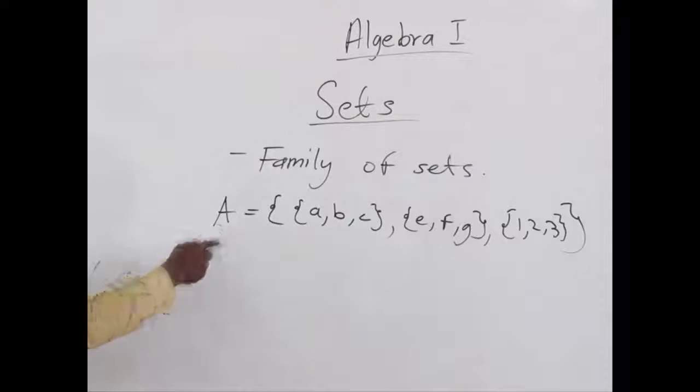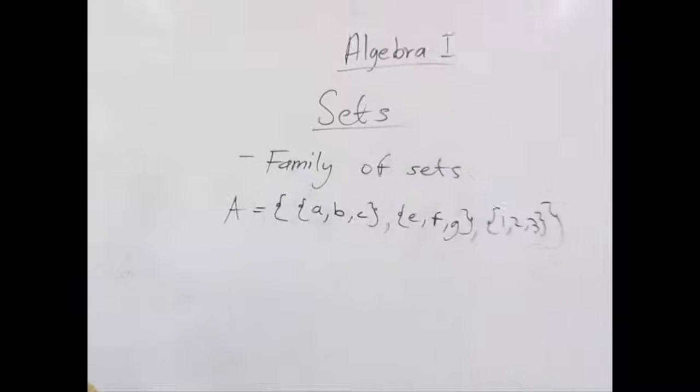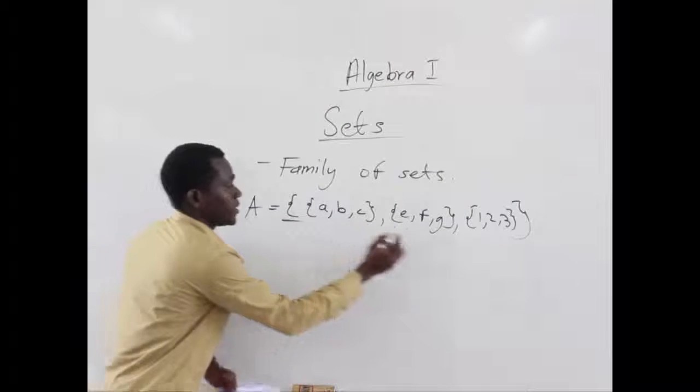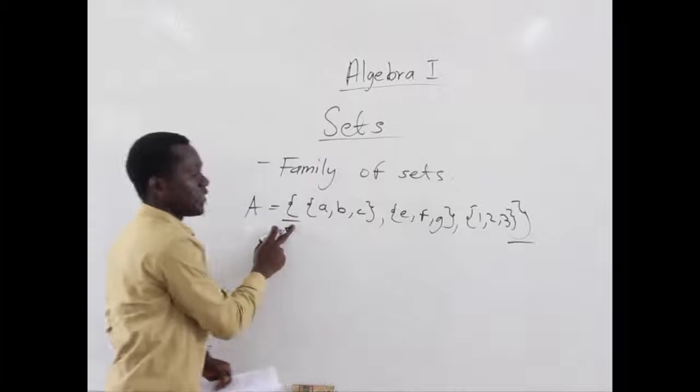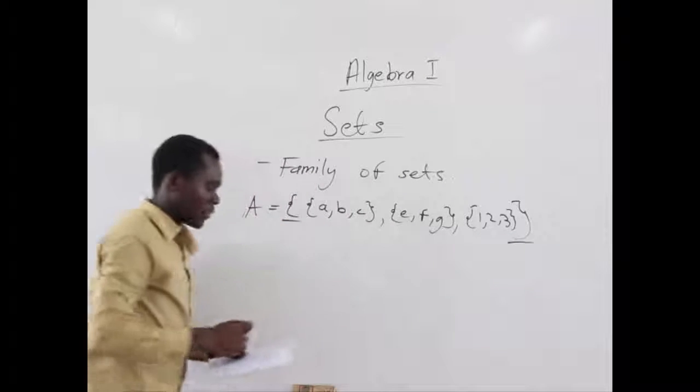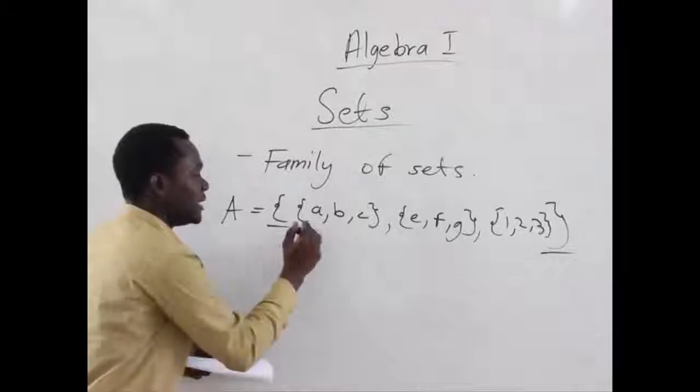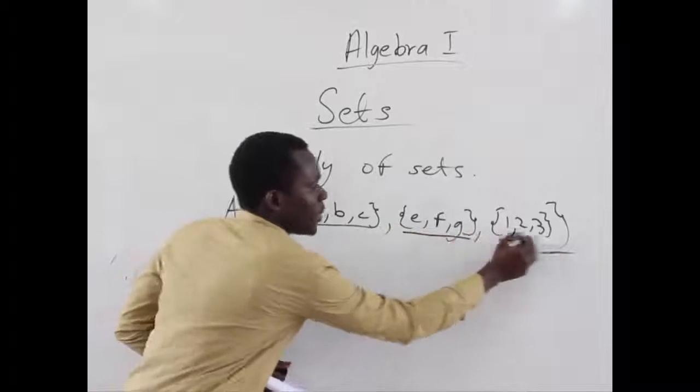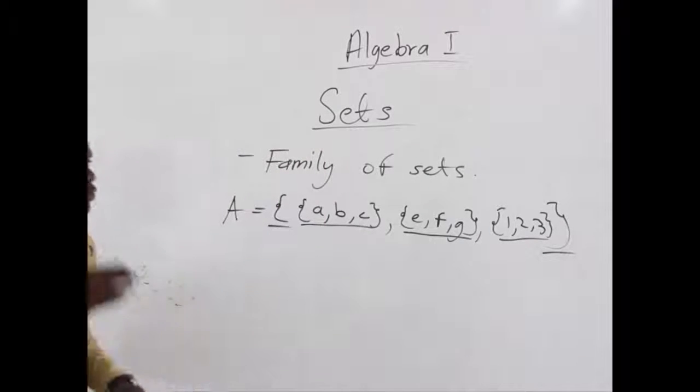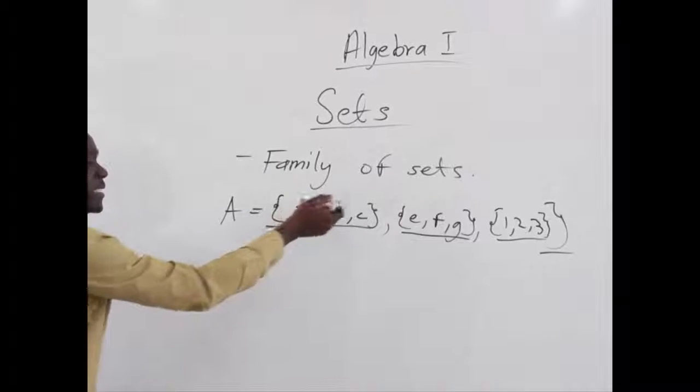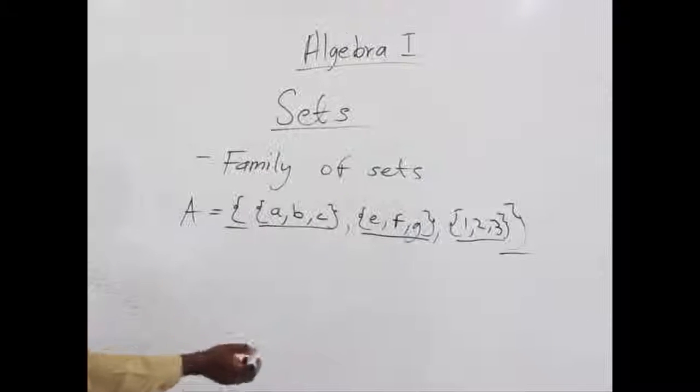All in one bigger set. So, set A becomes a family of sets. Why are we saying this? Because this is set A. The opening of the brackets and the ending of the whole bracket. But we can see there are brackets within the larger set. So, those smaller brackets which you see are also sets on their own.